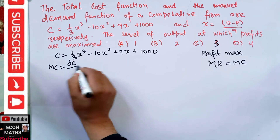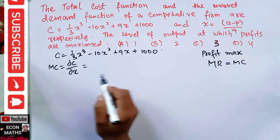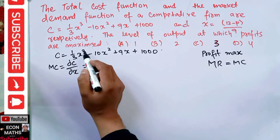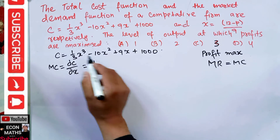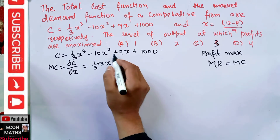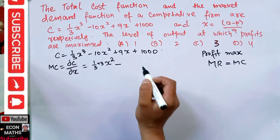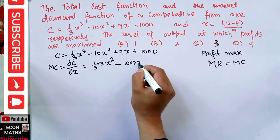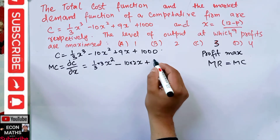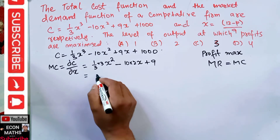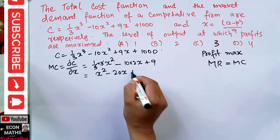Marginal cost is simply the derivative of the total cost function with respect to quantity X. Differentiating: the (1/3)x³ term gives x², the -10x² term gives -20x, and the derivative of 9x is 9. So marginal cost = x² - 20x + 9.